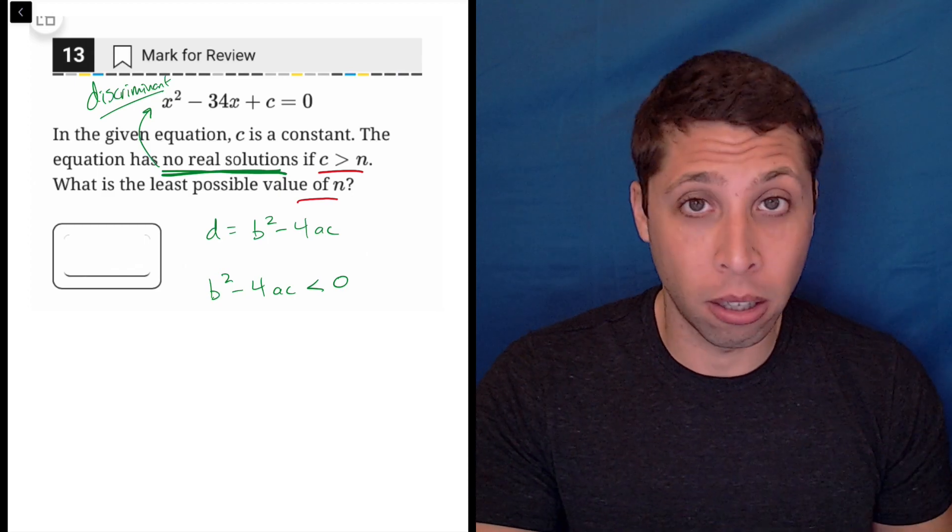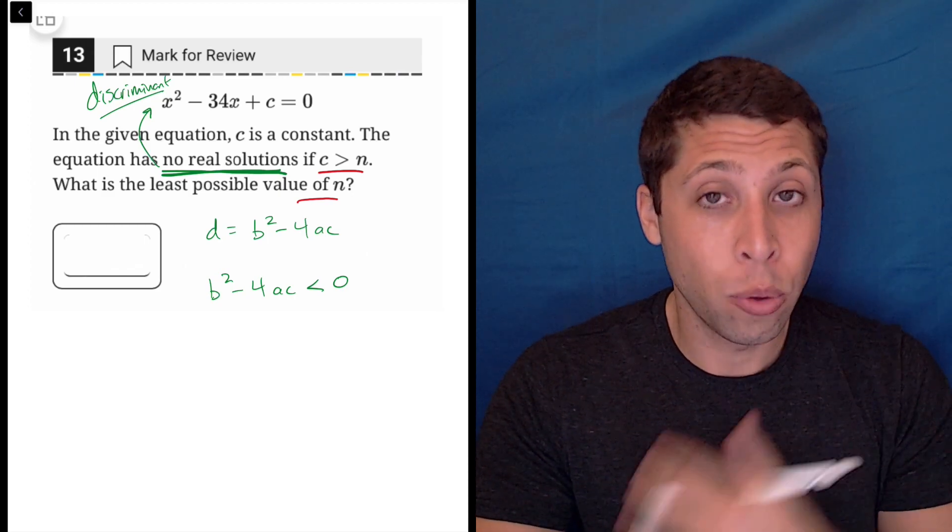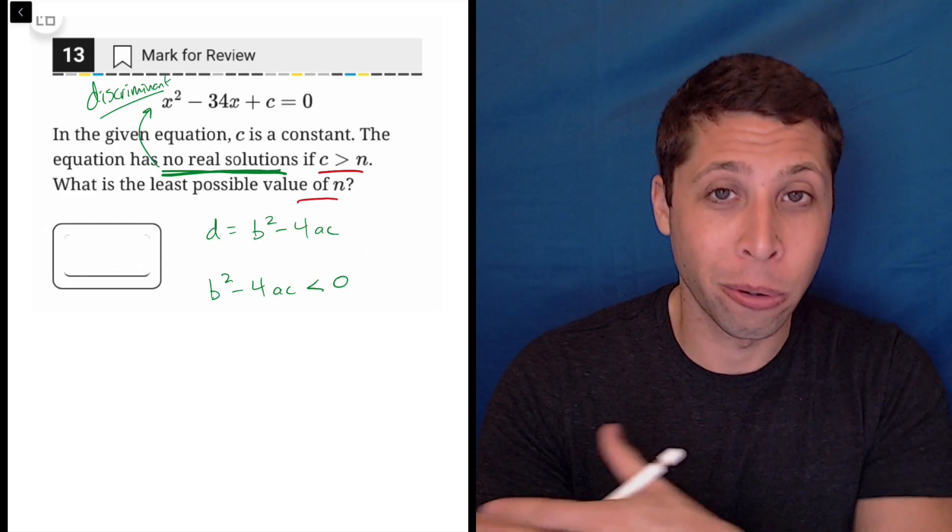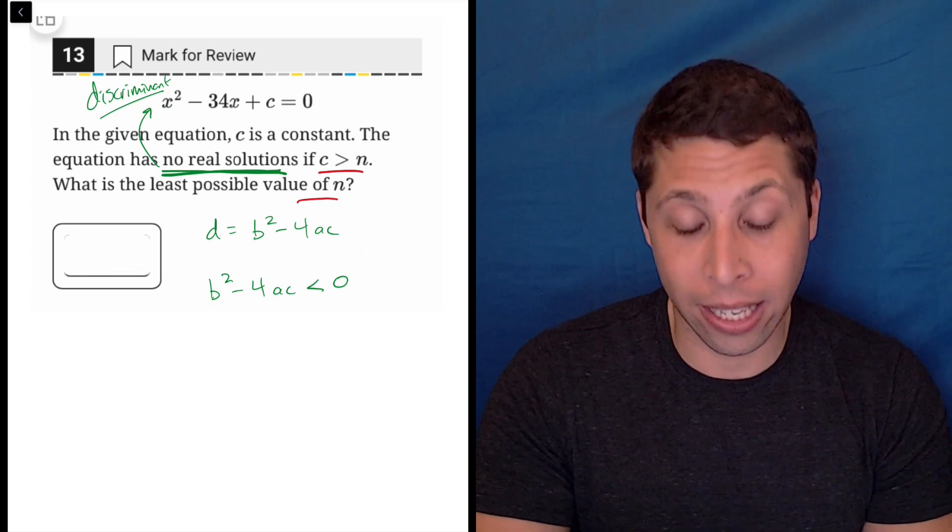Because if it's underneath a radical and you took a negative number and put it in there, you can't take the square root of a negative number. That's bad. Your calculator won't let you. So that's why there are no solutions, is basically this value would be negative.